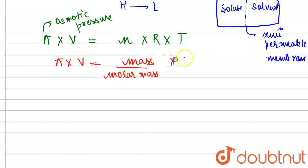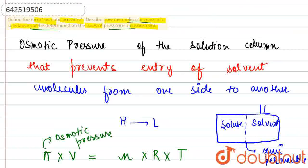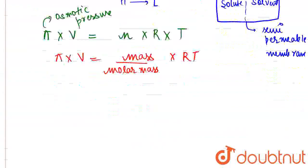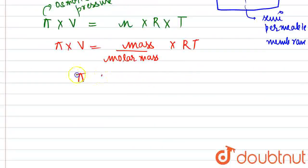So by substituting mass here and molar mass here, this is how the molecular mass of a substance can be determined. We can say that π is inversely proportional to the molecular mass of the respective system.